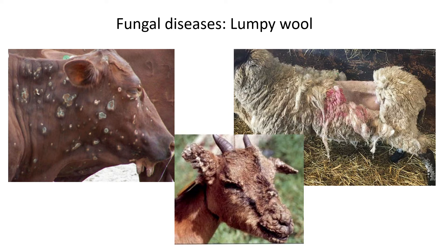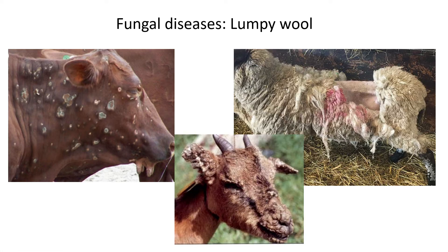The next fungal disease is lumpy wool, called that because sheep are most commonly affected. You can see a very emaciated sheep with wool falling off — bad for sheep farmers as they lose income from pelts. It also affects goats, where the face looks very sore with lesions forming around the nose and ears, and cattle, where lesions and sores form on the skin.